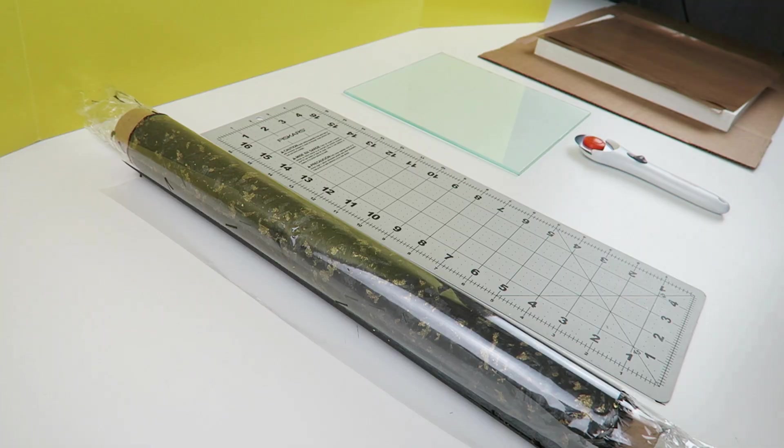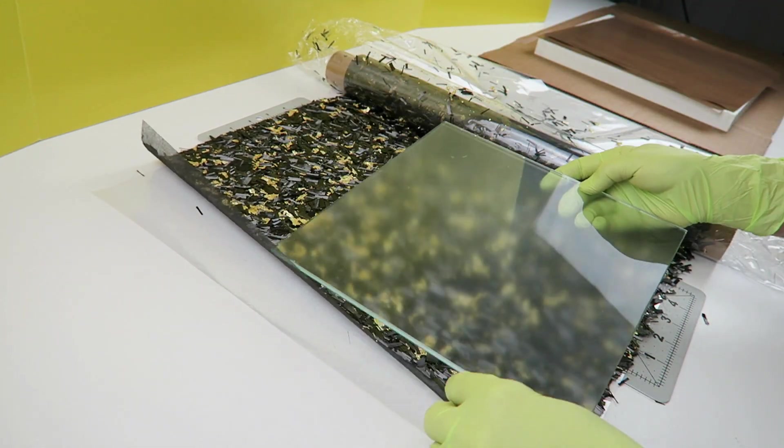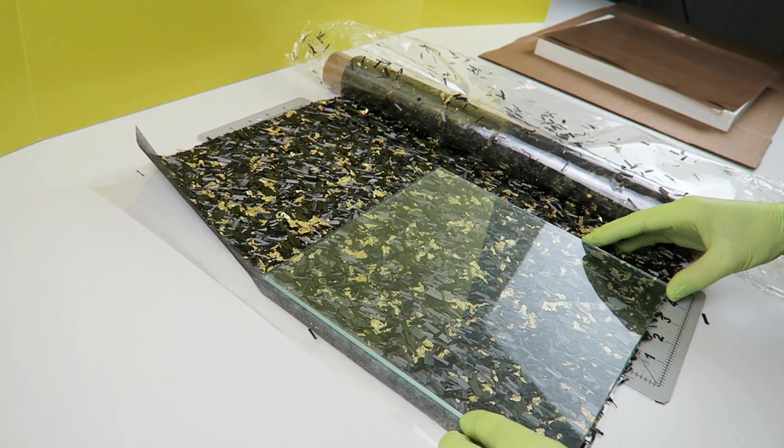While the parts are printing, cut a piece of gold-forged carbon fiber fabric to the size of your glass plates. One layer of fabric is sufficient to make a single-sided veneer sheet.